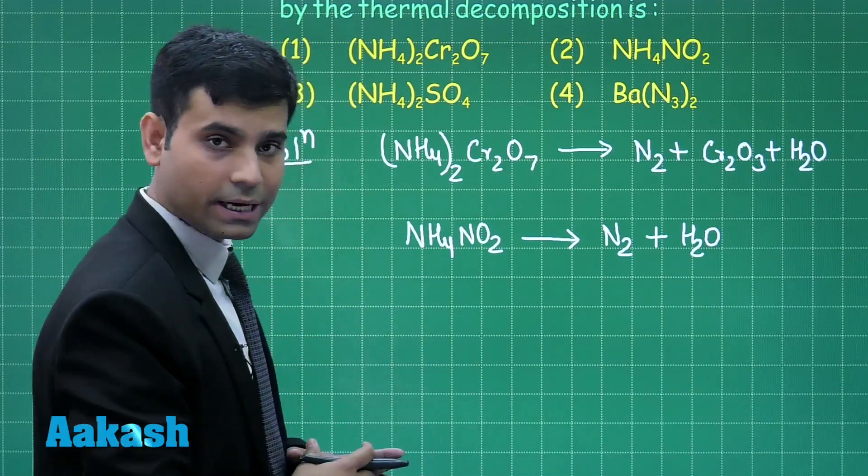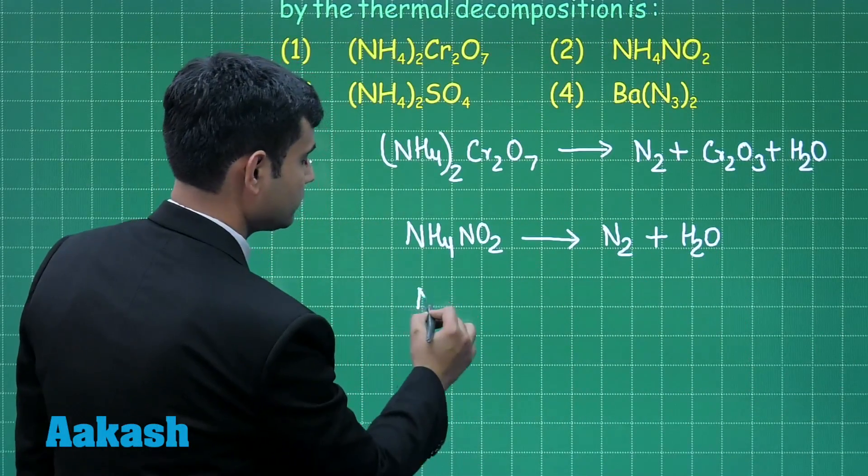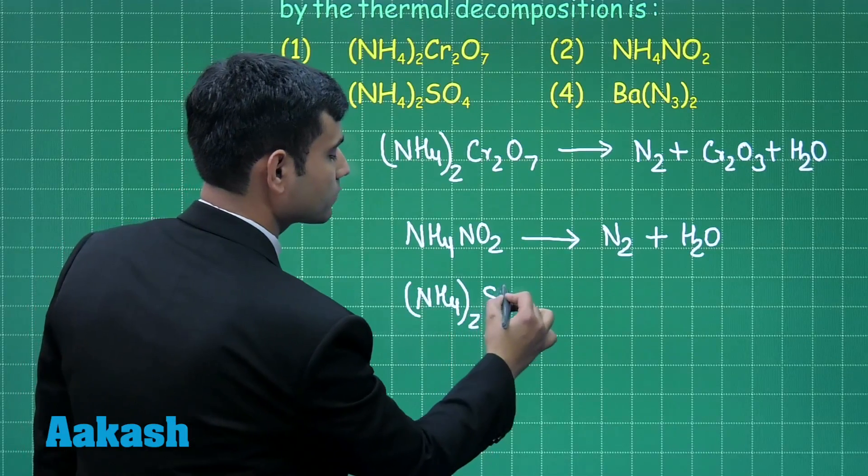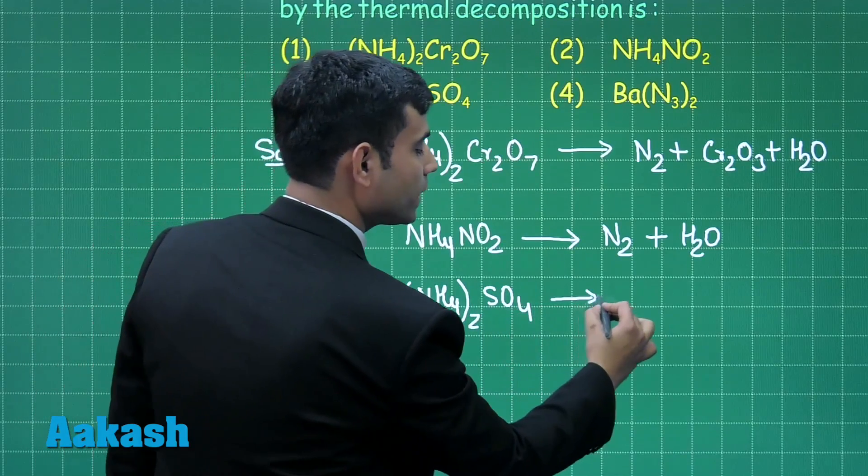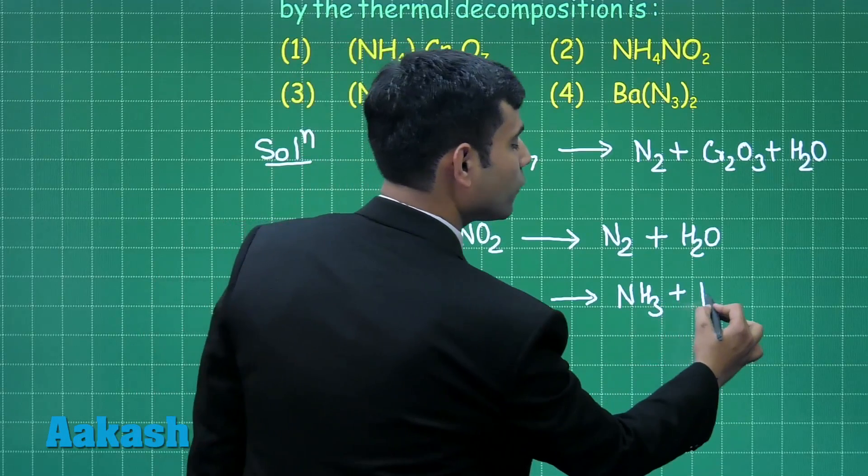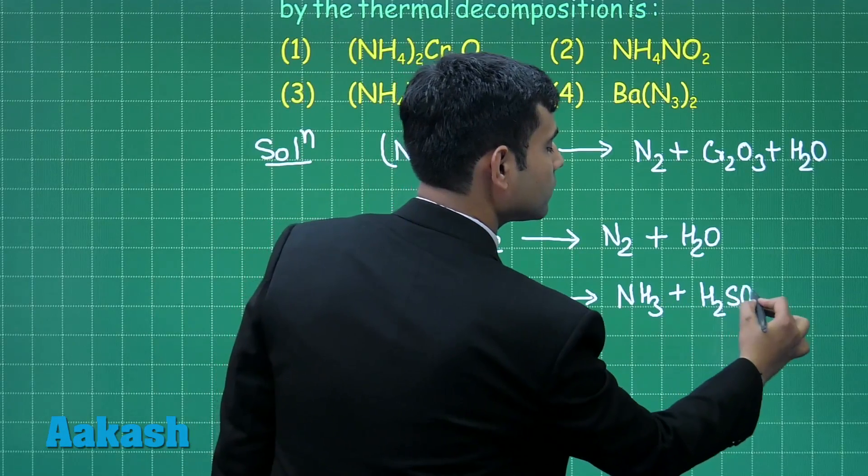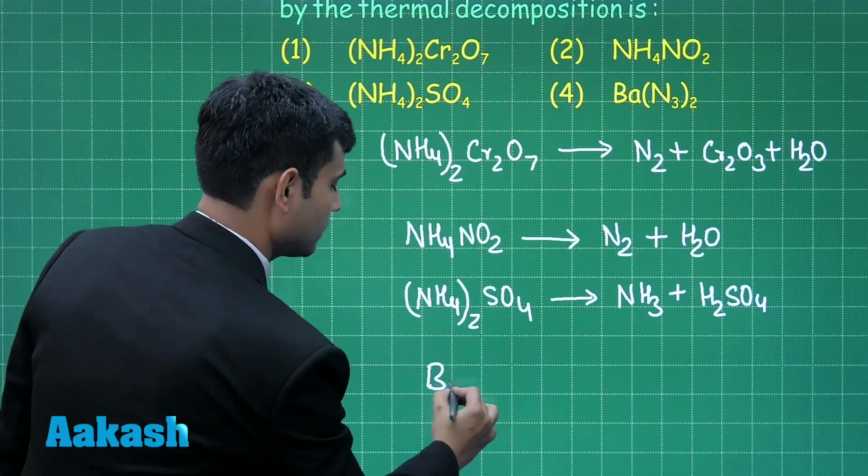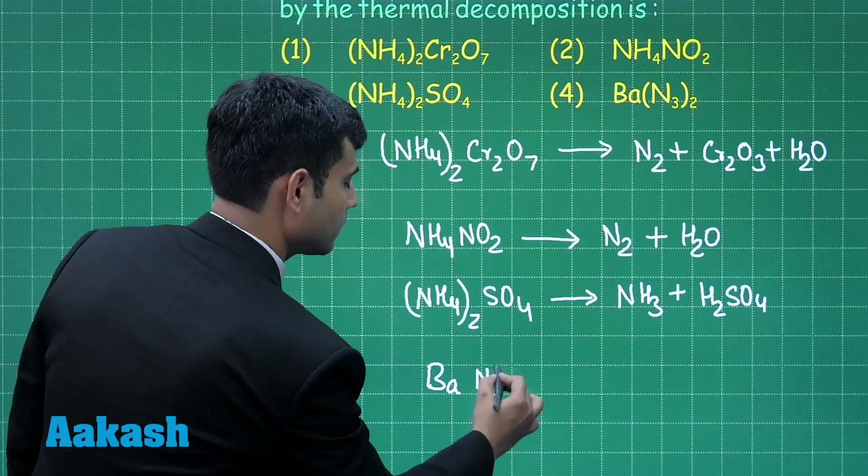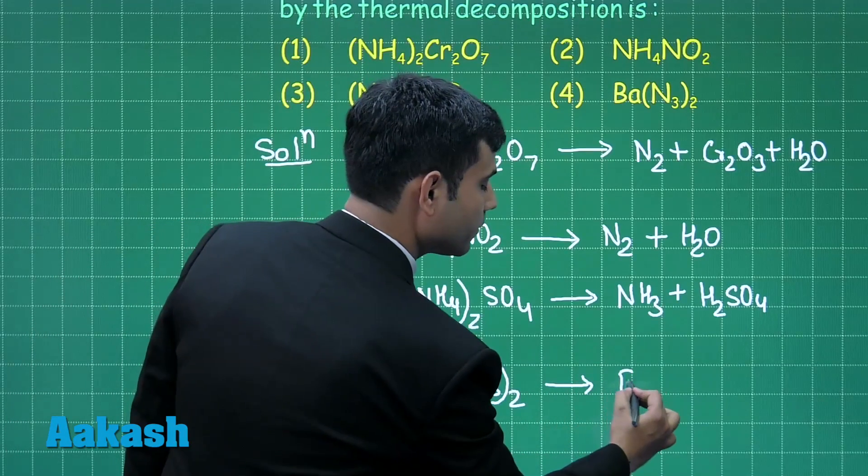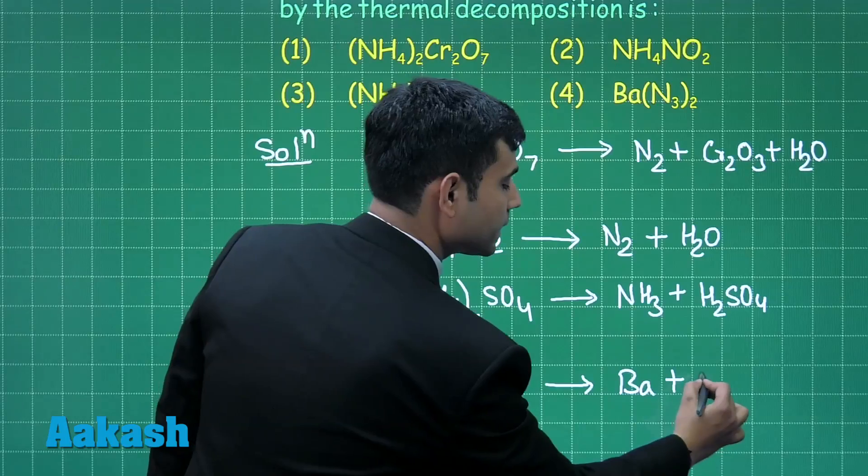When ammonium sulphate is heated, it gives us ammonia gas and H2SO4. When barium azide is heated, it gives us barium plus nitrogen.